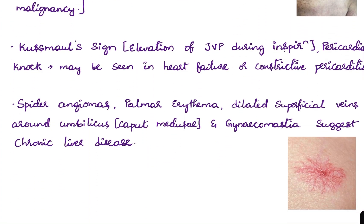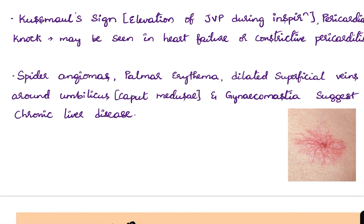Kussmaul's sign — elevation of JVP during inspiration — and a pericardial knock may be seen in patients with heart failure or constrictive pericarditis.